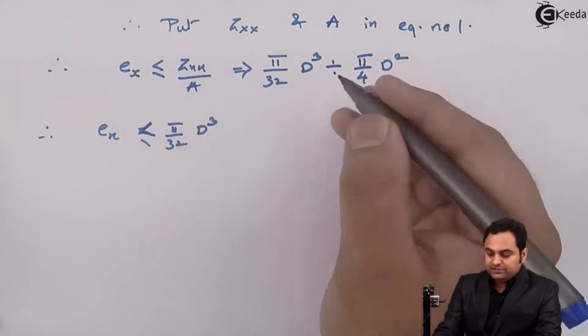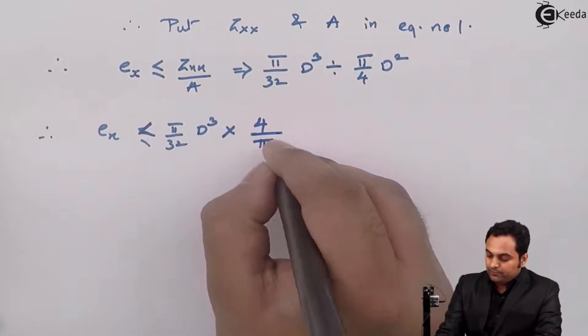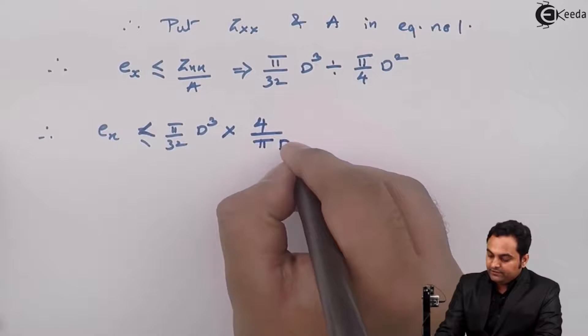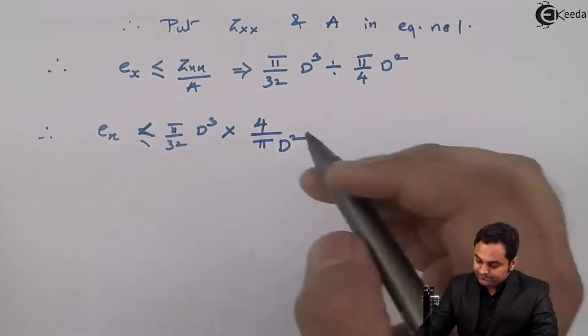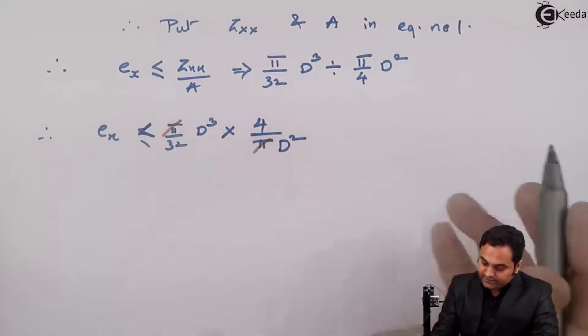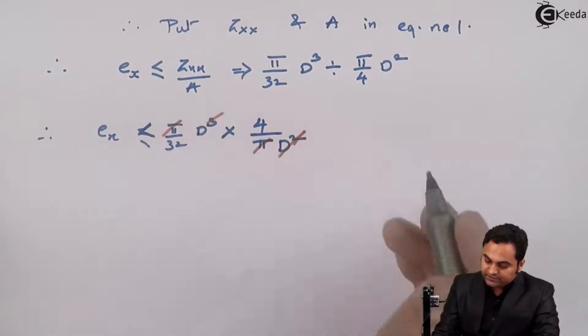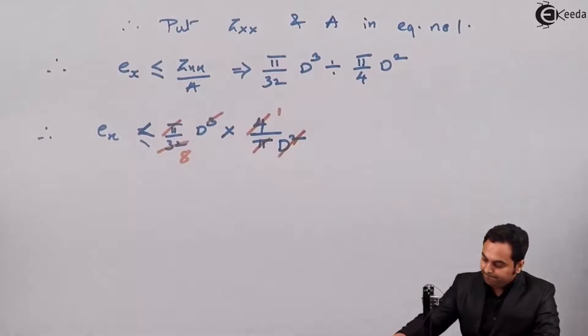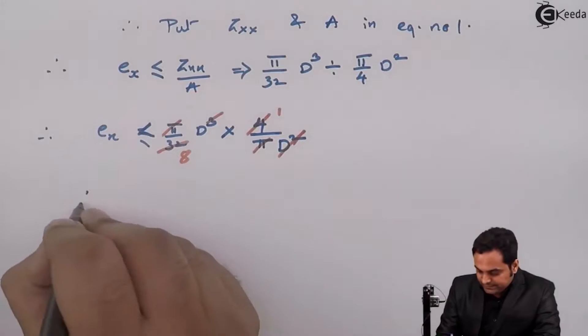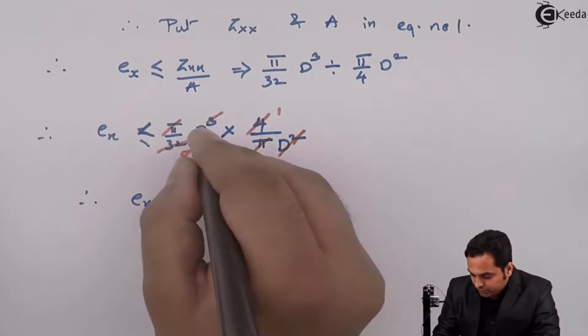Therefore EX ≤ π/32 D³. Instead of division, if I write multiplication this becomes 4/π D². After cancellation, π cancels out, D² cancels to leave D, and 4 and 32 gives 8. Therefore eccentricity with respect to x is less than or equal to D/8.